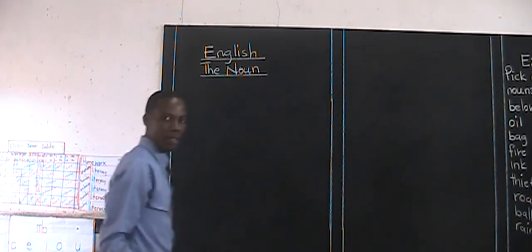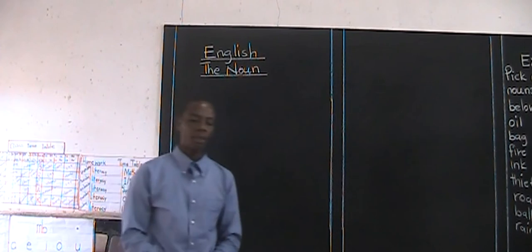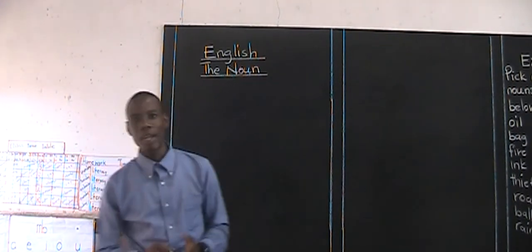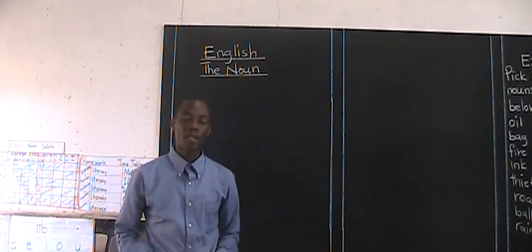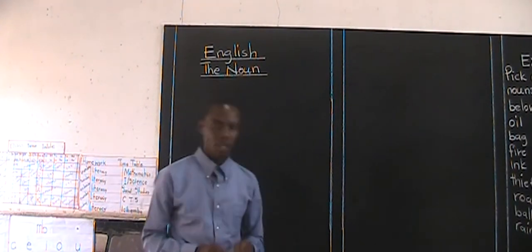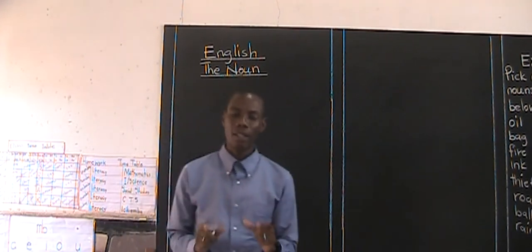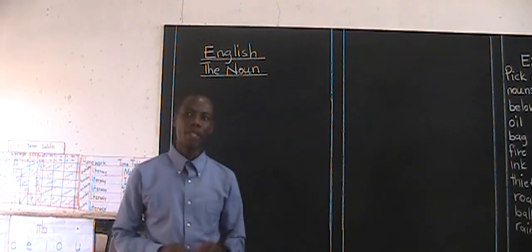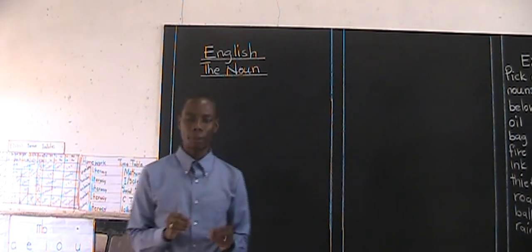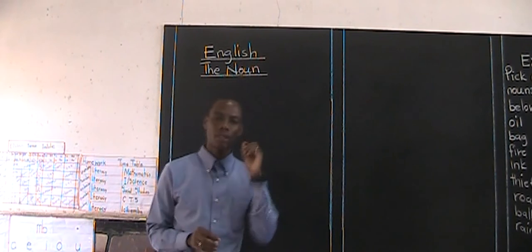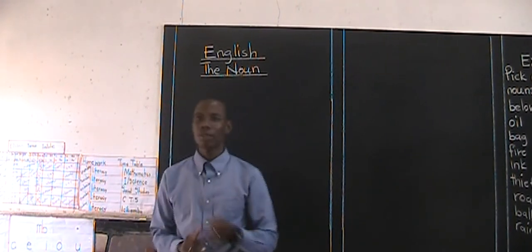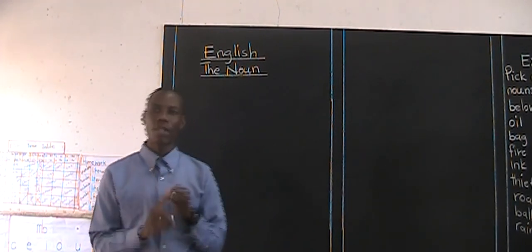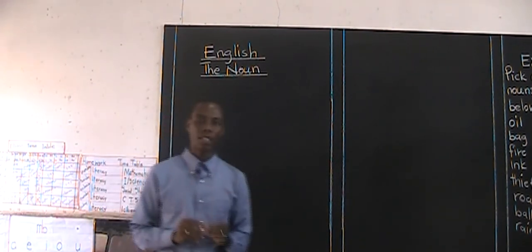In our previous video, under nouns, we did look at one type of noun. The type of noun we looked at was a collective noun. We said collective nouns are names of things that name a group — it could be a group of people, animals, or whole things. Such nouns are known as a collective noun.